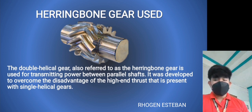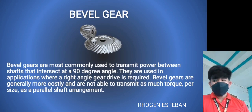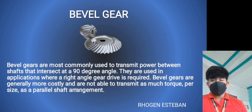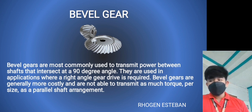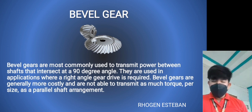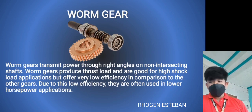Bevel gears are most commonly used to transmit power between shafts that intersect at a 90-degree angle. Bevel gears are used in differential drives which can transform power to two axles spinning at different speeds, such as those used when cornering in automotive applications, and they are also used in manufacturing machines such as hand drills.